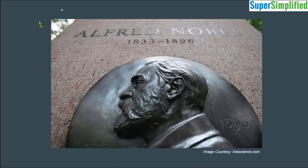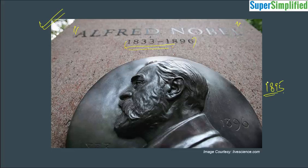So first, a brief background of the Nobel Prize. It was instituted as per the will of Alfred Nobel, who was a scientist who invented dynamite. His lifespan was 1833 to 1896. Nobel Prizes were instituted in 1895 and were given away for the first time in the year 1901.